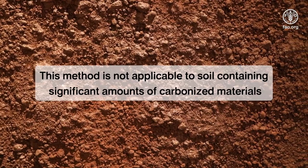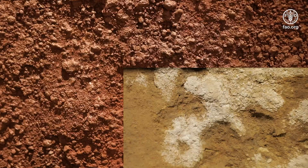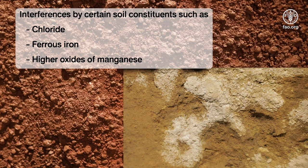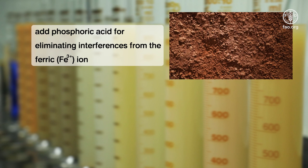This method is for the determination of organic carbon in soils. It is not applicable to soils containing significant amounts of carbonized materials. This method is subject to interferences by certain soil constituents that lead to false results. Chloride, ferrous ion, and high oxides of manganese have been shown to undergo oxidation reactions in chromic acid mixtures, leading to incorrect values for organic carbon. In case of soils with high concentrations of such constituents,